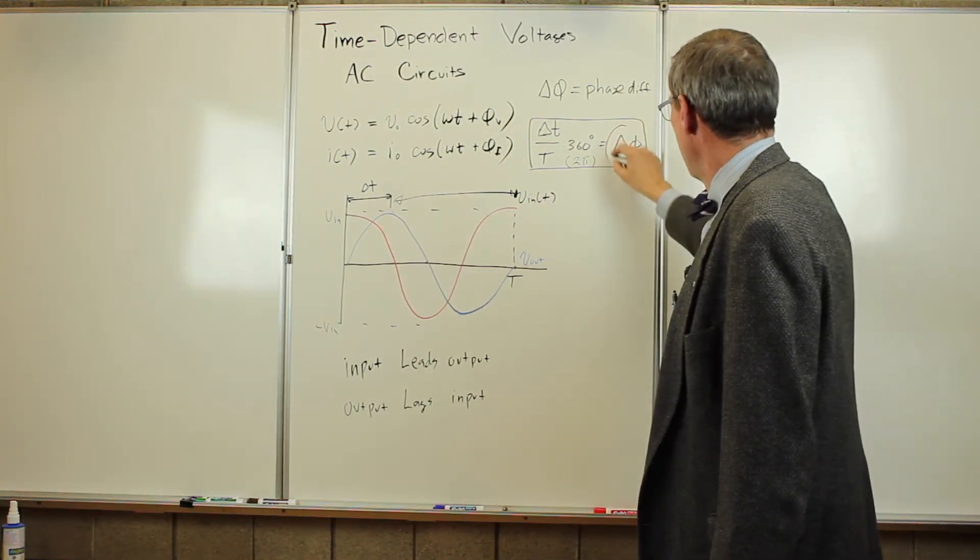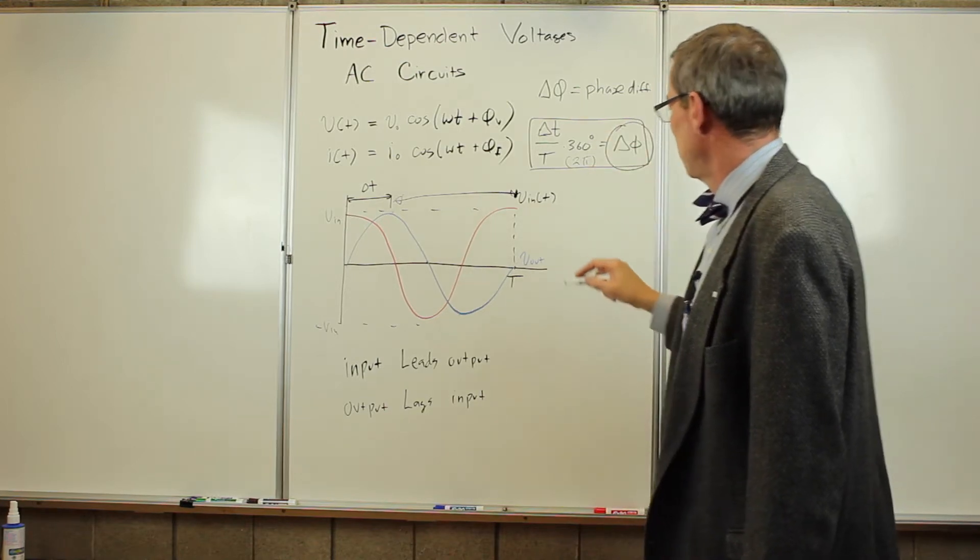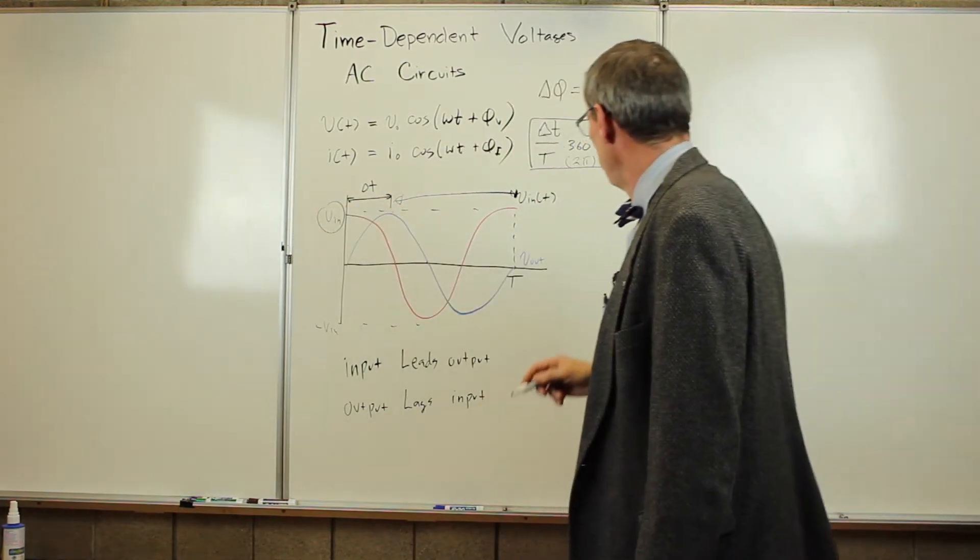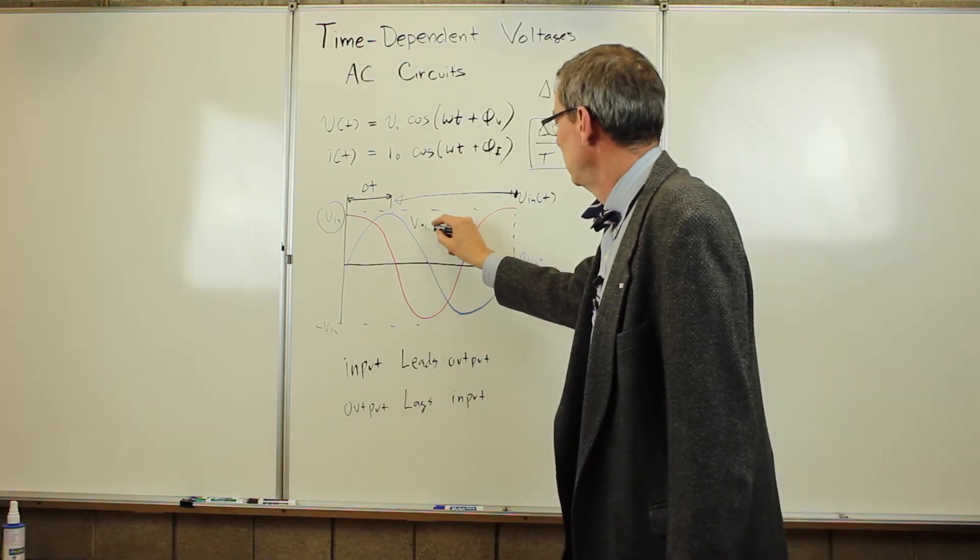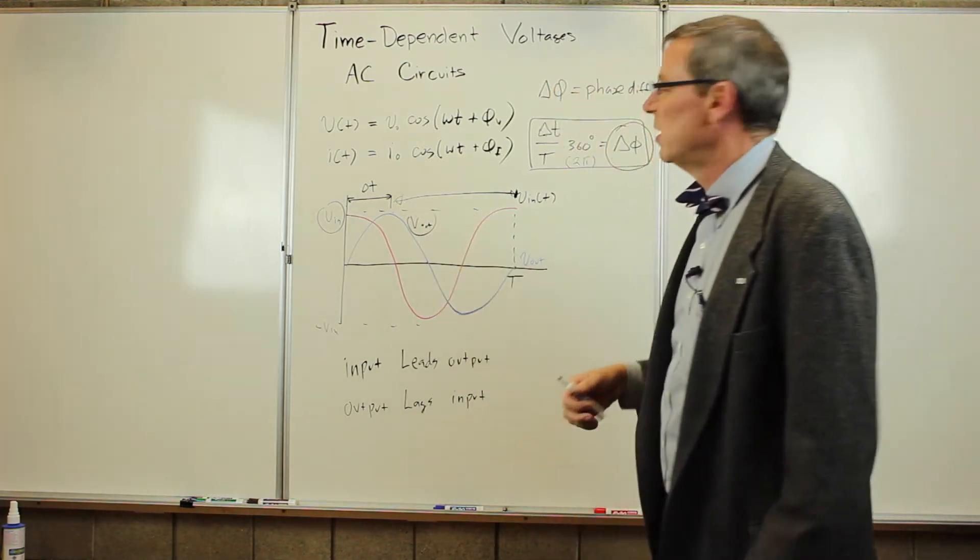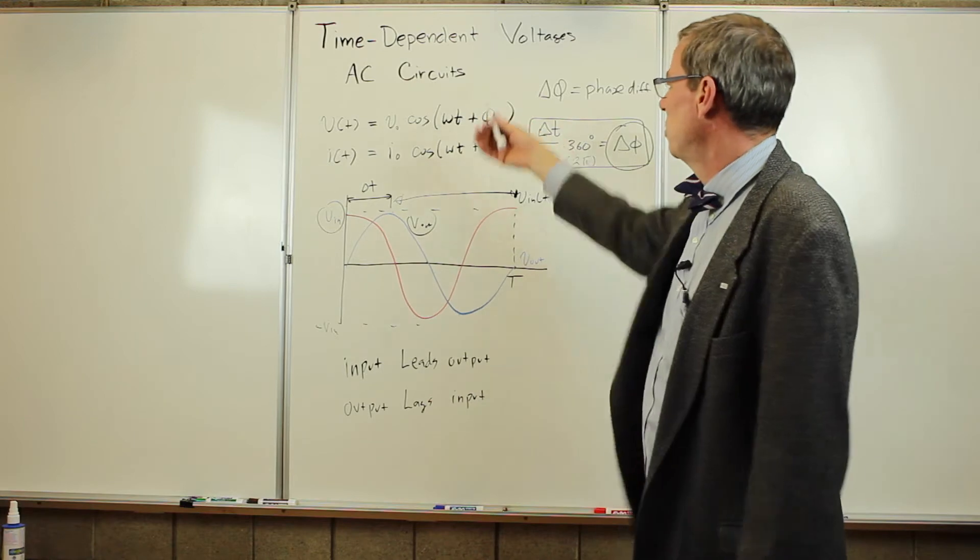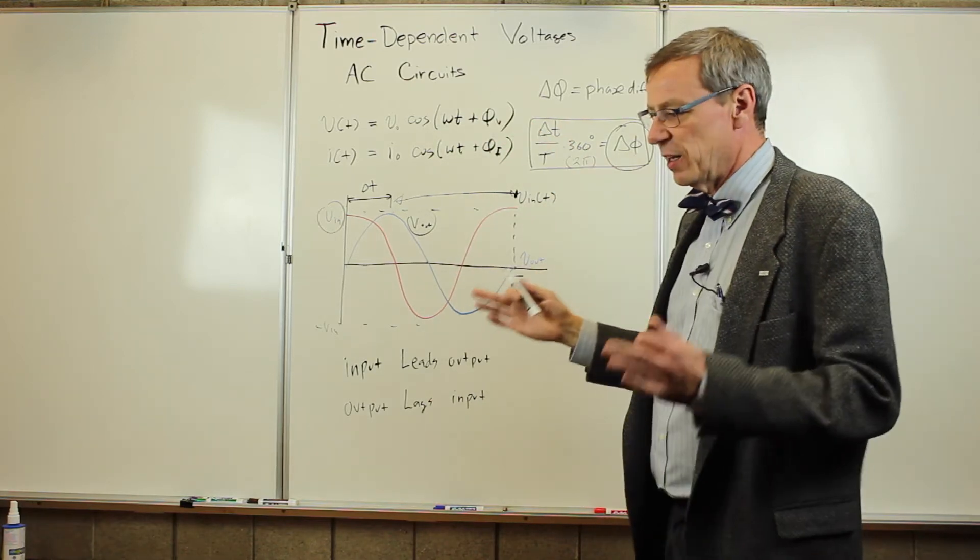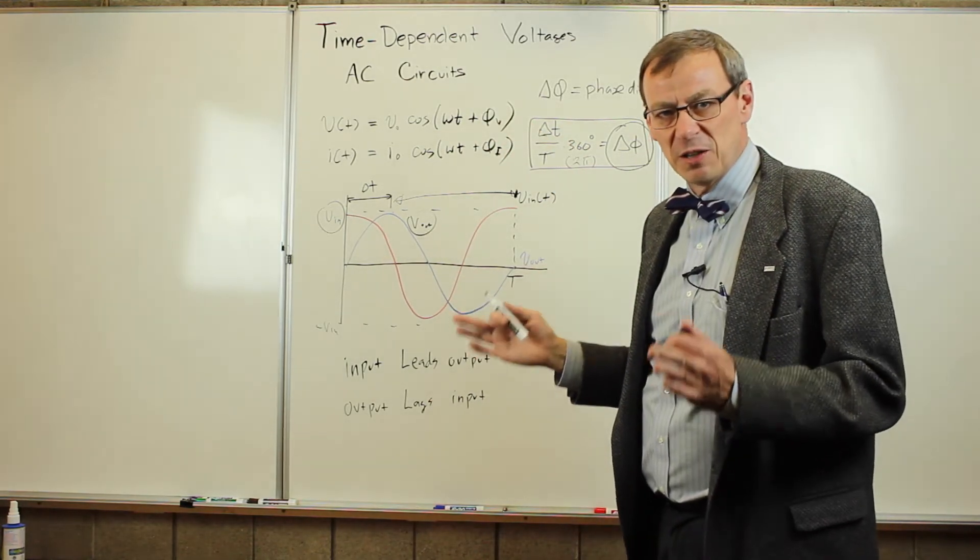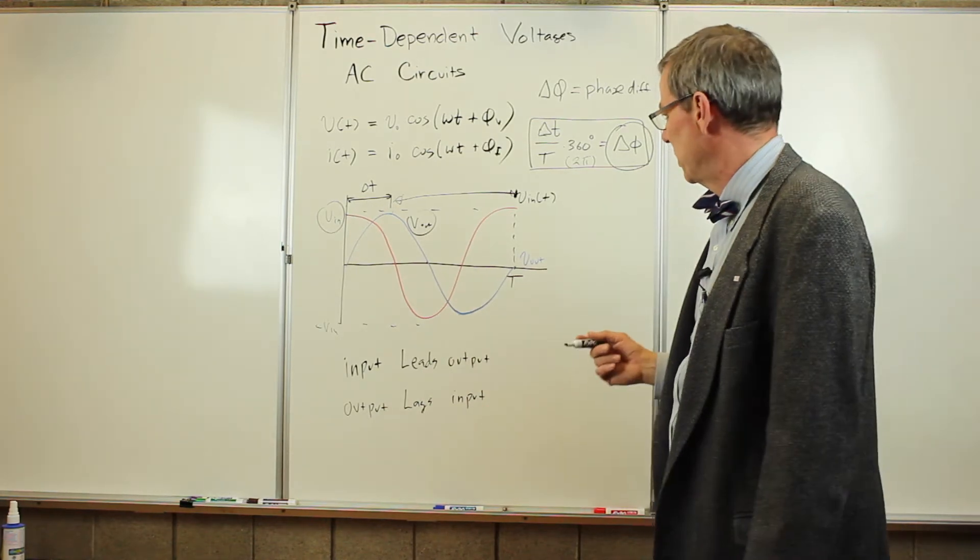And that phase difference, the magnitude of the input, and the magnitude of the output voltage are the three things that we're going to need to characterize what's going on with AC circuits that have an input and an output. So that's what we're going to be worried about measuring.